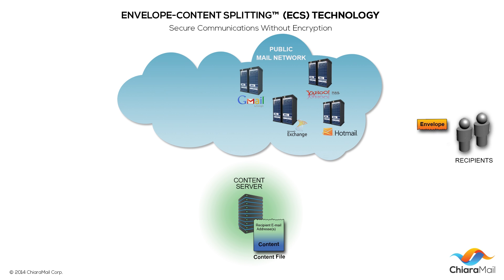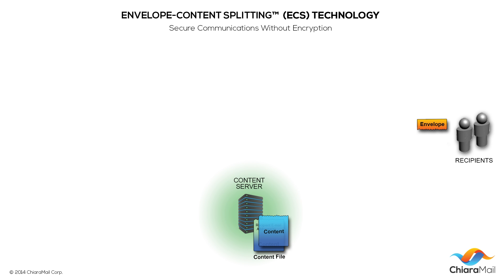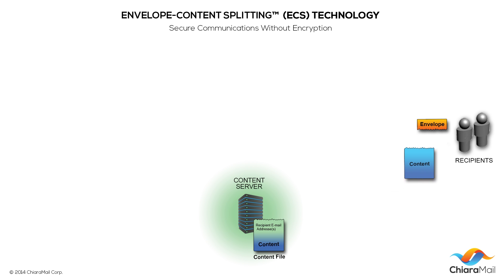When the recipient receives the message, their mail application receives the content pointer from the envelope, using it to send a request to the content server to retrieve the message body content. If the recipient opens an attachment, the attachment content is retrieved the same way using the respective content pointers.